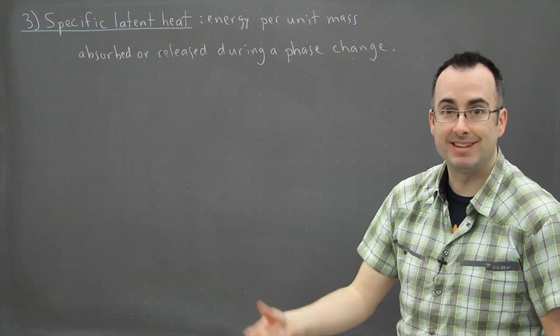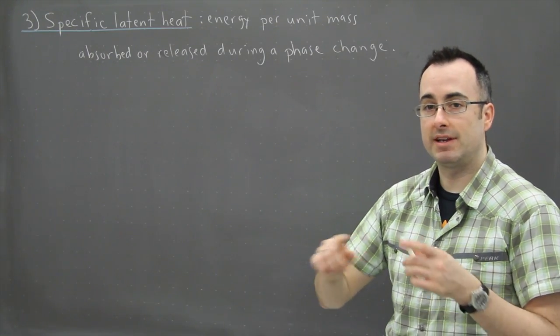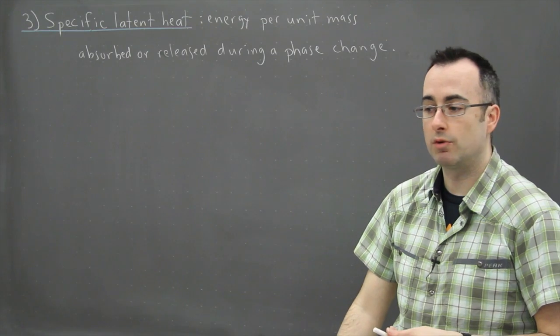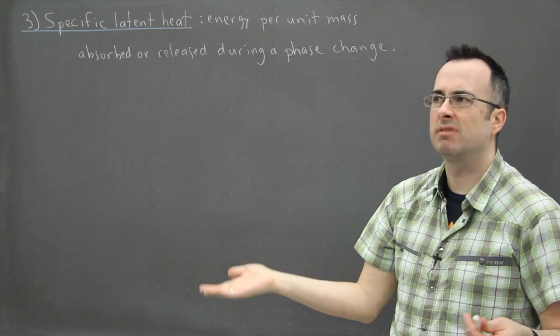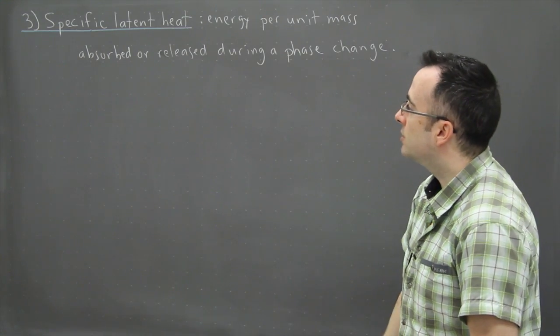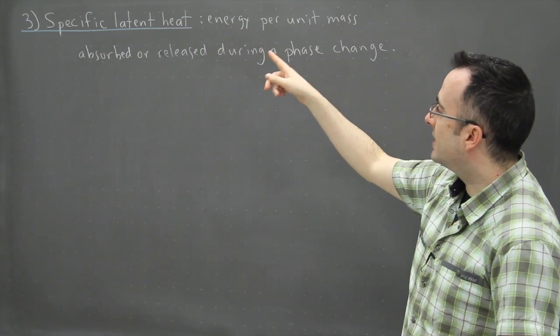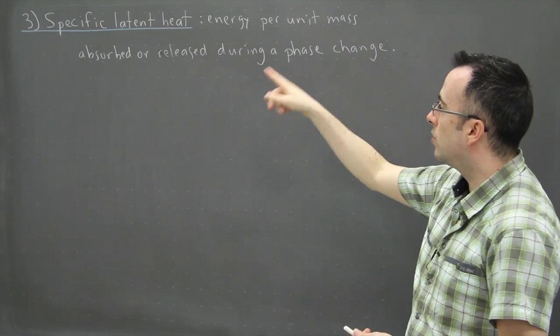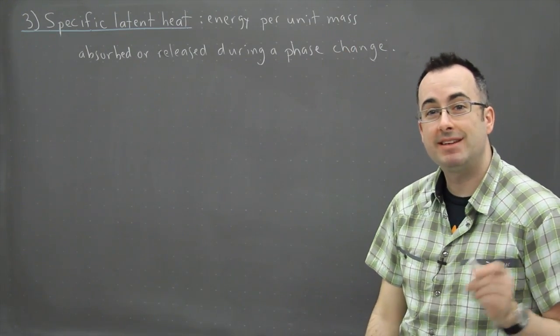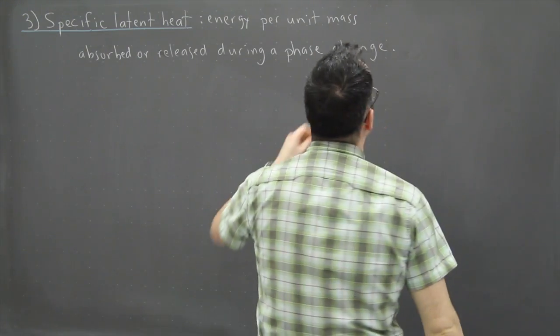So you can have things freezing as well, you can even have things skipping a step so some things go directly from a solid to a gas if there's not enough pressure like on Mars for example. So if we're looking at specific latent heat it's the energy per unit mass that's absorbed or released whenever you have a phase change and we have an equation for it.